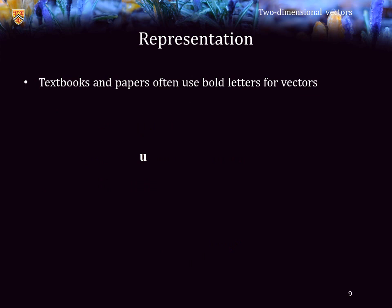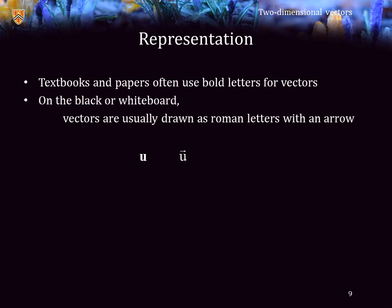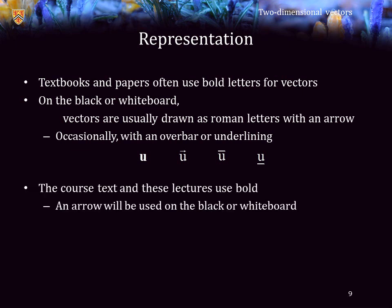Textbooks and papers often use bold letters to represent vectors. On the blackboard, vectors, at least by this author, are usually drawn as Roman letters with an arrow. Finally, occasionally, you may see a vector represented with either an overbar or underlining. In any case, pay attention to what the user or the author is using and just accept the notation that is being used. In the course text and these lectures, we are using bold. In the classroom, this author will use an arrow above the letter.